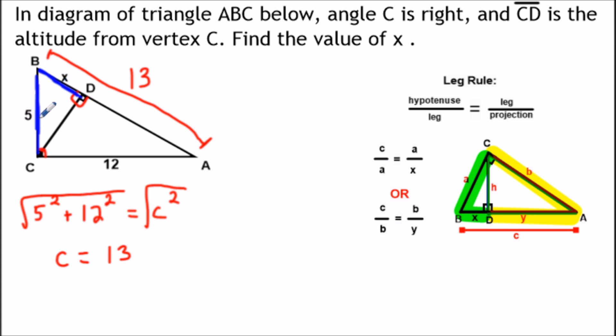So if we use the formula we could set up a proportion and solve. So the hypotenuse is 13 over the leg 5 is equal to the length of the leg, which is 5, over X, the projection. Once again, if you'd rather use the letter representation, you can.